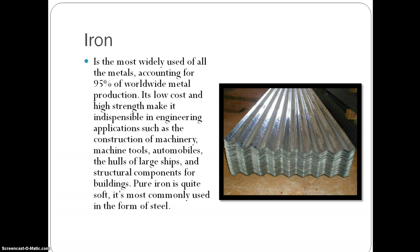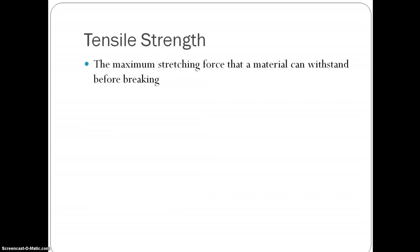Iron is the most widely used of all the metals, and it counts for 95% of the worldwide metal production. That's a lot. It's low cost and high strength, and so they use it a lot in machinery, large ships, automobiles, tools, structural components for buildings, etc. A lot of things. Yes. It's soft in its pure form, but it's most commonly used in the form of steel. So, steel and iron are pretty much your main go-to. Well, steel, yeah.